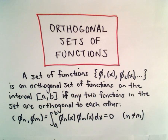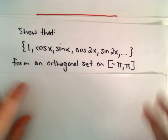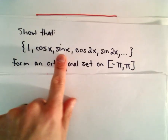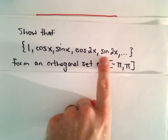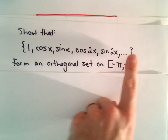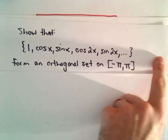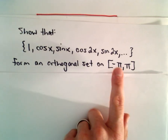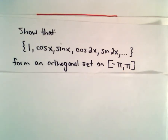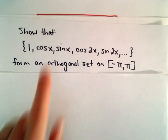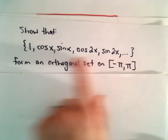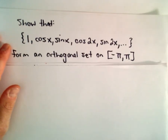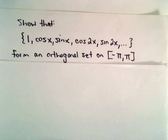Let's show that the set {1, cos(x), sin(x), cos(2x), sin(2x), cos(3x), sin(3x), ...} forms an orthogonal set on the interval negative π to positive π. This is an important set of functions because this is the set that we use when we talk about Fourier series.